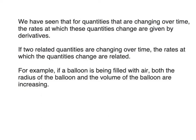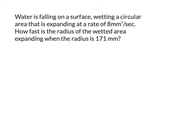I'm going to start with an example problem where I'll run through the entire solution, then break down what I did into a list of steps, and then run through two other examples from class. The problem: water is falling on a surface, wetting a circular area that is expanding at a rate of 8 millimeters squared per second. How fast is the radius of the wetted area expanding when the radius is 171 millimeters?